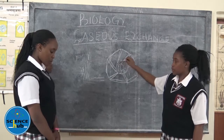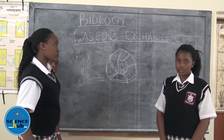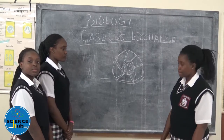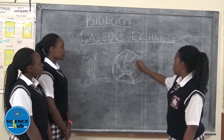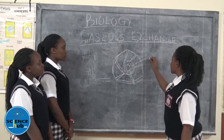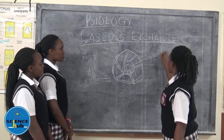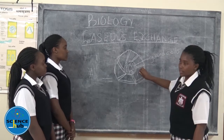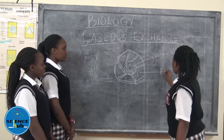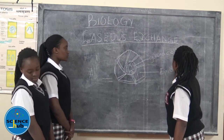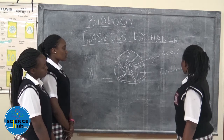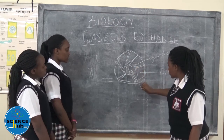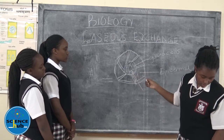As you can see, these have been shaped, so they are known as the guard cells. This is the epidermal cell. This is the nucleus.